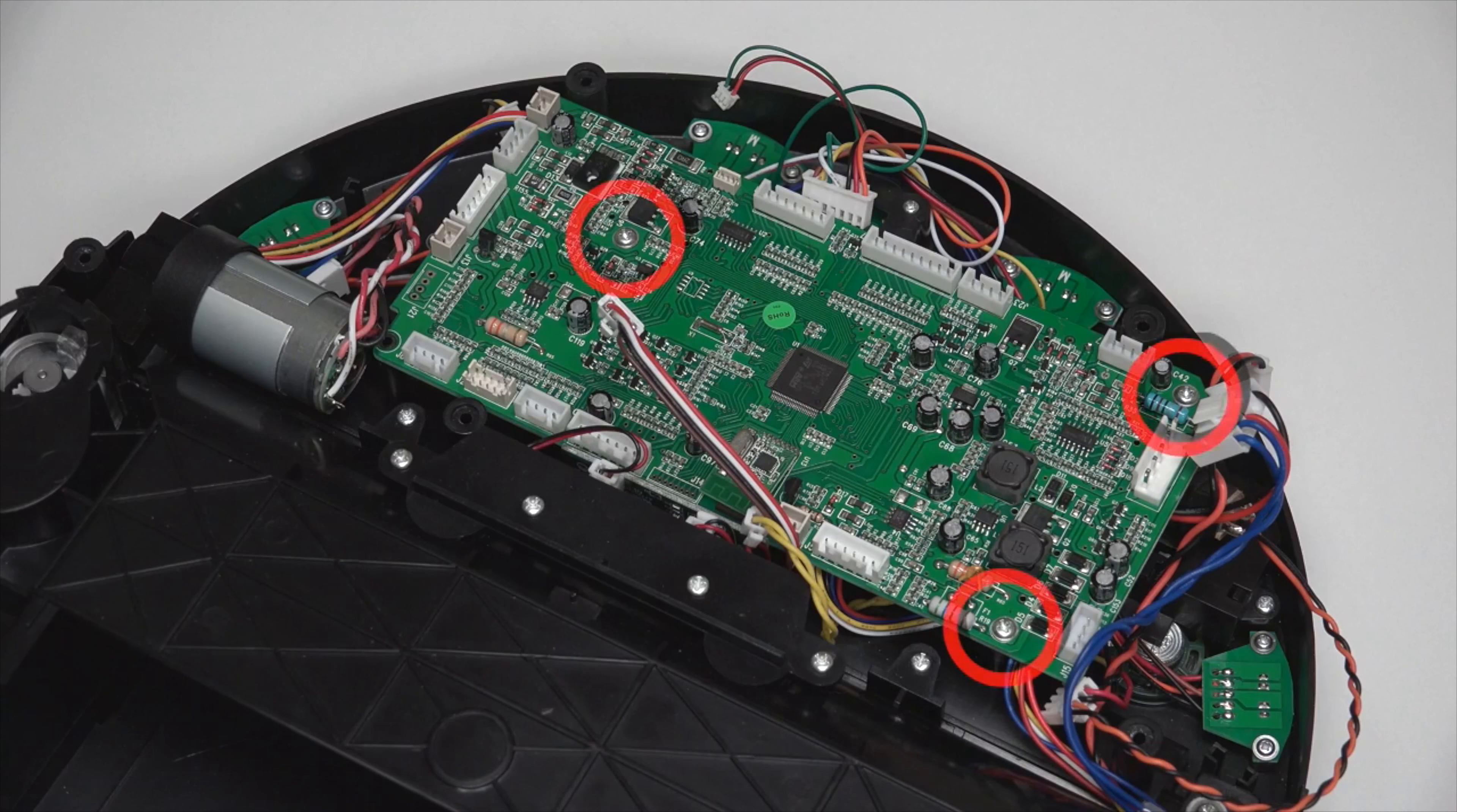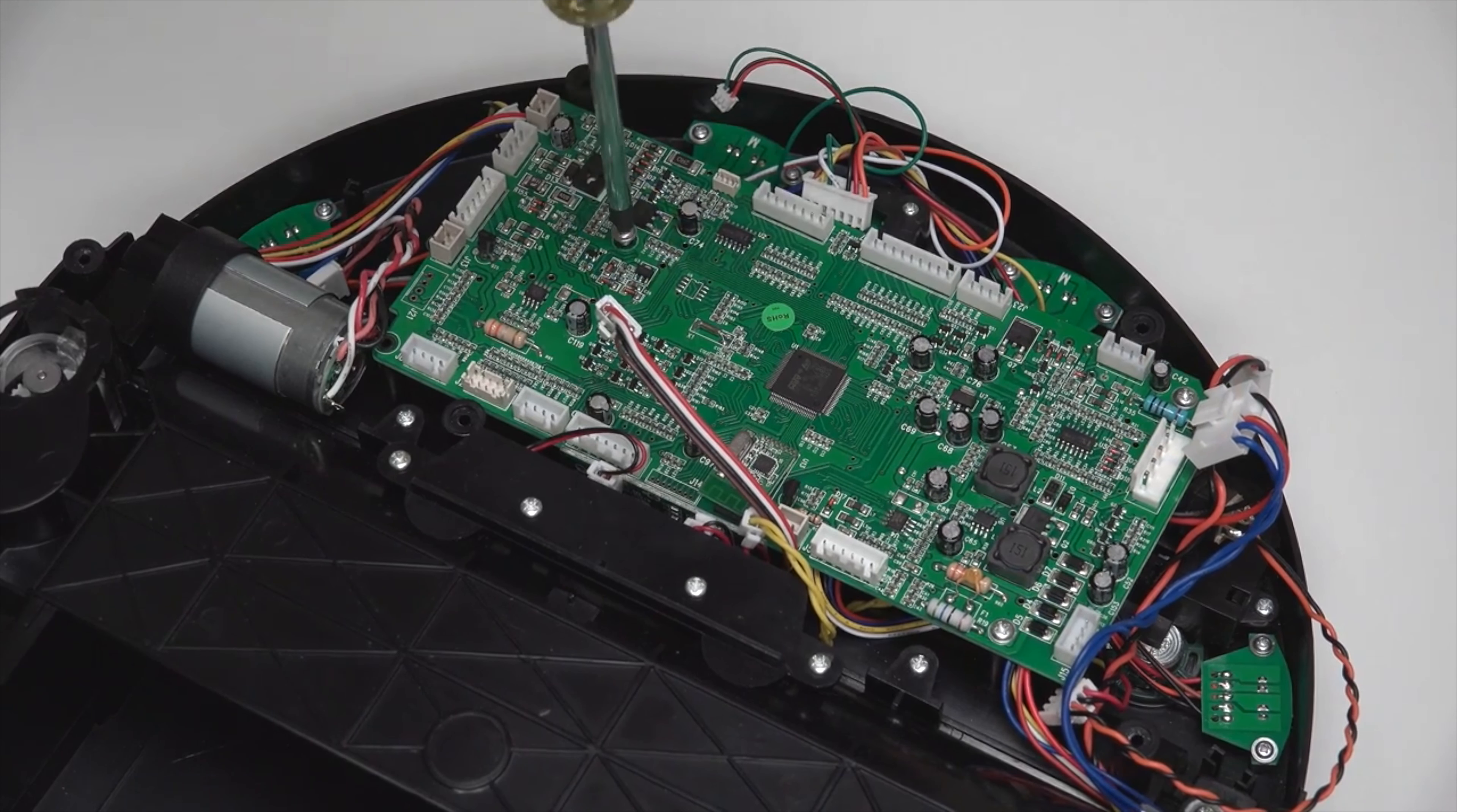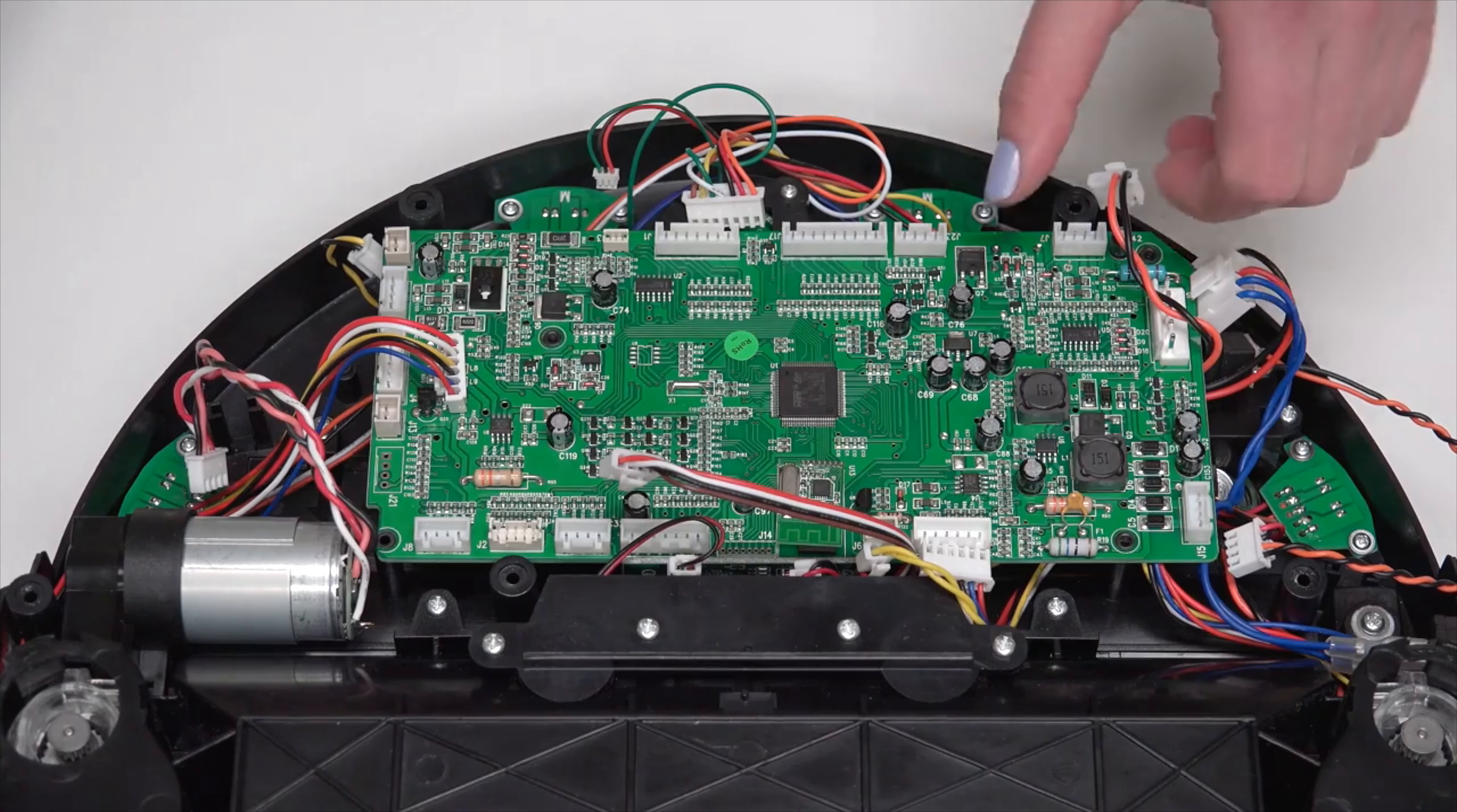Remove three screws on the mainboard. Keep them aside for later reassembly. Now lift the mainboard out of Bob.